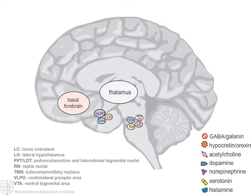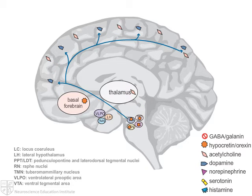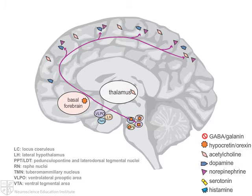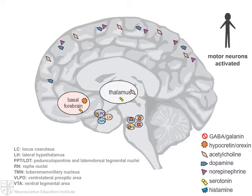These neurons are involved in the maintenance of wakefulness through their actions on other components of the wake circuitry, including acetylcholine from the basal forebrain and pedunculopontine and laterodorsal tegmental nuclei onto the thalamus, and dopamine from the ventral tegmental area. Additionally, hypocretin-orexin neurons stimulate norepinephrine from the locus coeruleus and serotonin from the raphe nucleus. The release of norepinephrine and serotonin influences activation of motor neurons.